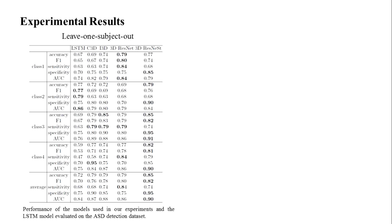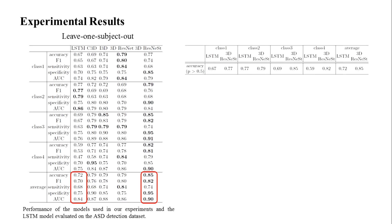Here are our experimental results. On average, our proposed 3D ResNet model achieves the best performance when considering accuracy, F1 score, and AUC. The average detection accuracy is improved from 0.72 to 0.85. Our model outperforms the LSTM baseline model in all classes.